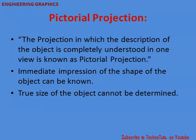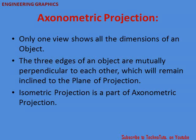Pictorial projection is the projection in which the description of the object is completely understood in one view only. You can understand the whole object from one view and do not require other views of the object. The immediate impression of the shape of the object can be known, but the true size of the object cannot be determined in pictorial projection.